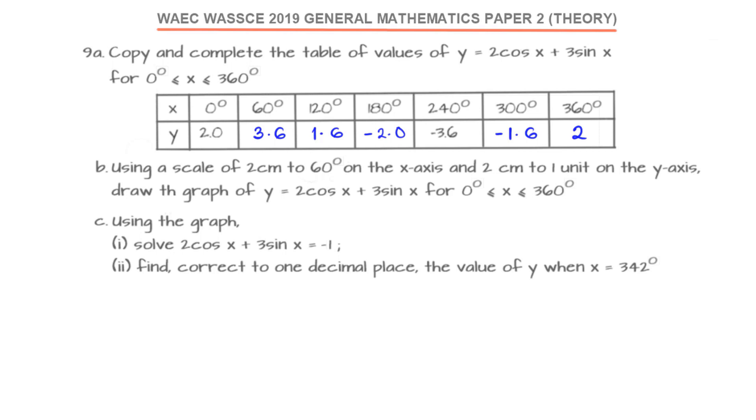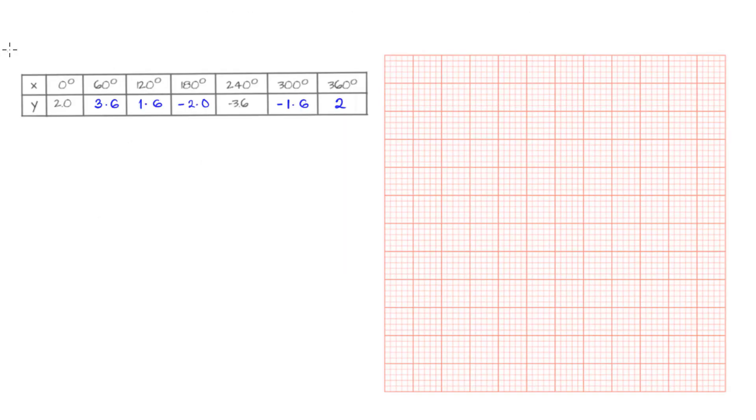We are to use this table to now plot our graph. On the graph, we are to use 2 cm to 60 degrees on the x-axis and 2 cm to 1 unit on the y-axis. They have given us the scale. We have generated our table. This is the table of values for the equation y = 2cos(x) + 3sin(x). Now we want to plot the graph for that particular equation.